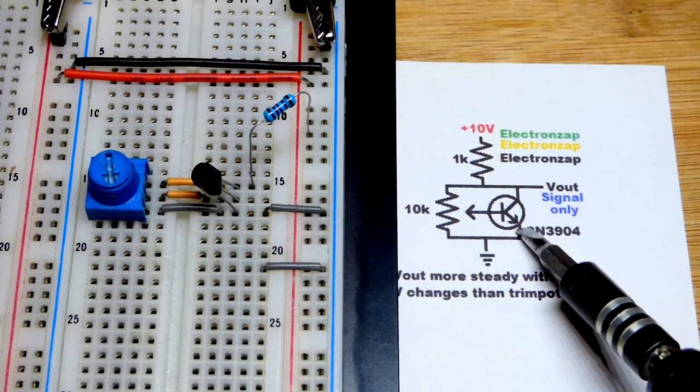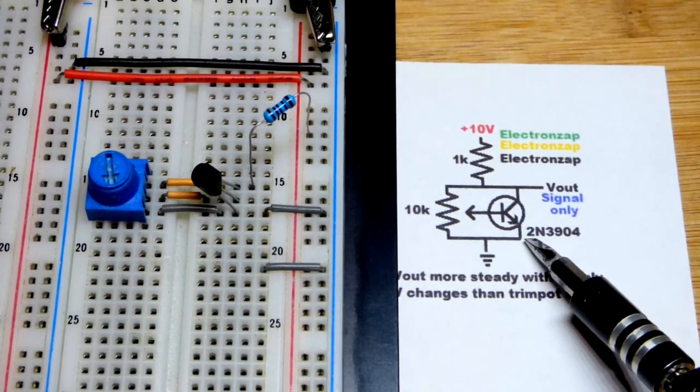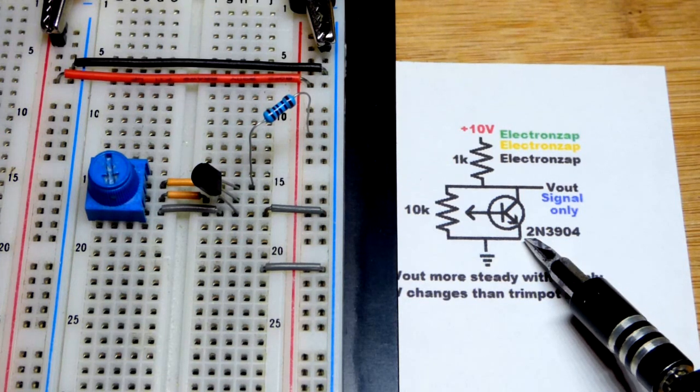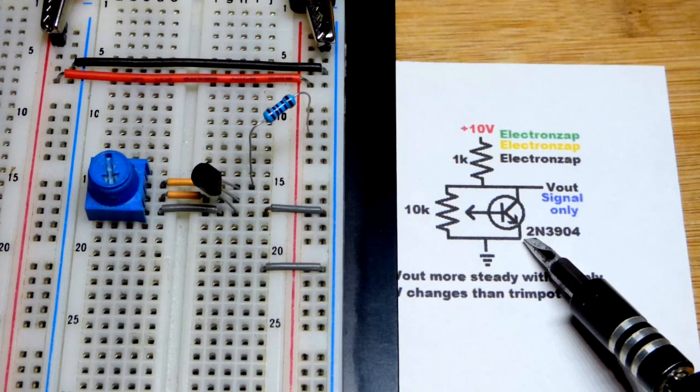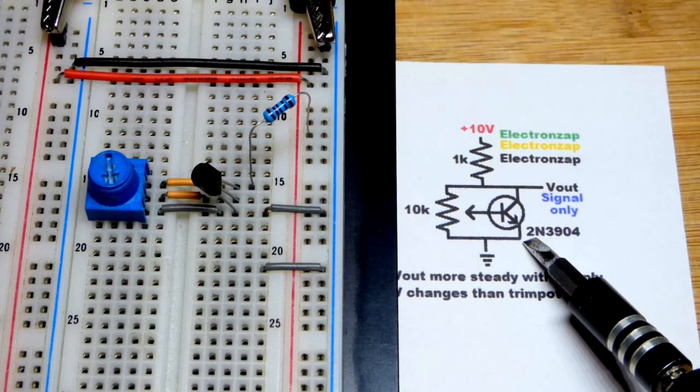So now in this video, we're going to look at the NPN bipolar junction transistor wired as a Zener diode. I never see this. I think I've only seen one example in the Art of Electronics, but I think it's a really cool little circuit fragment right here.